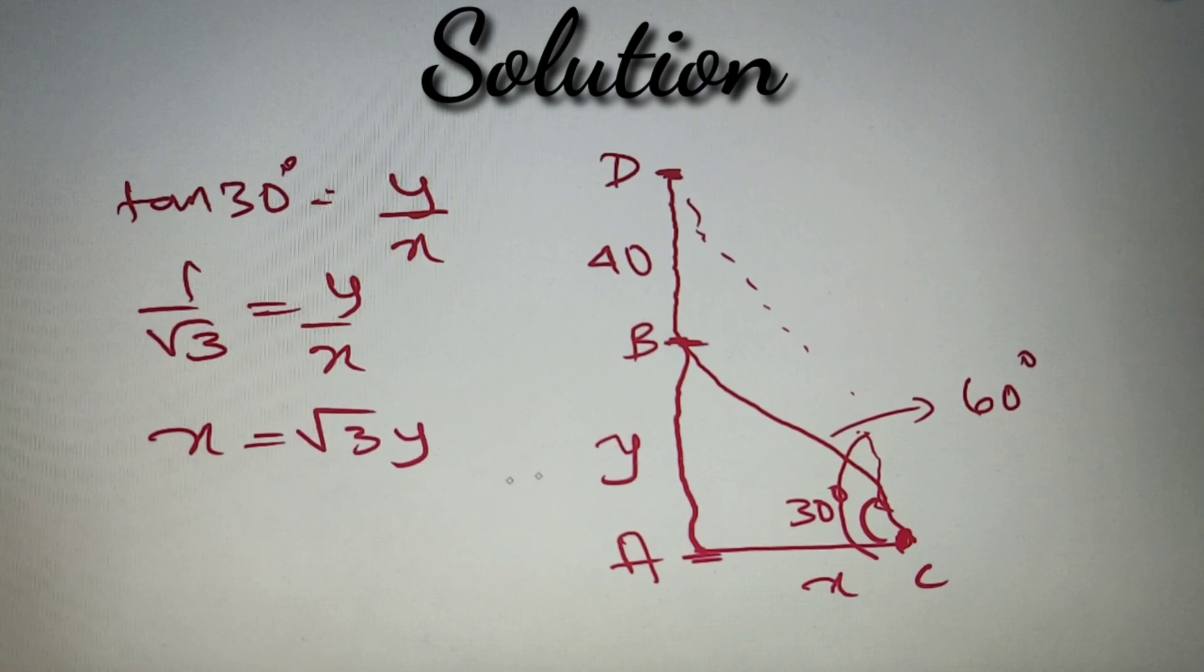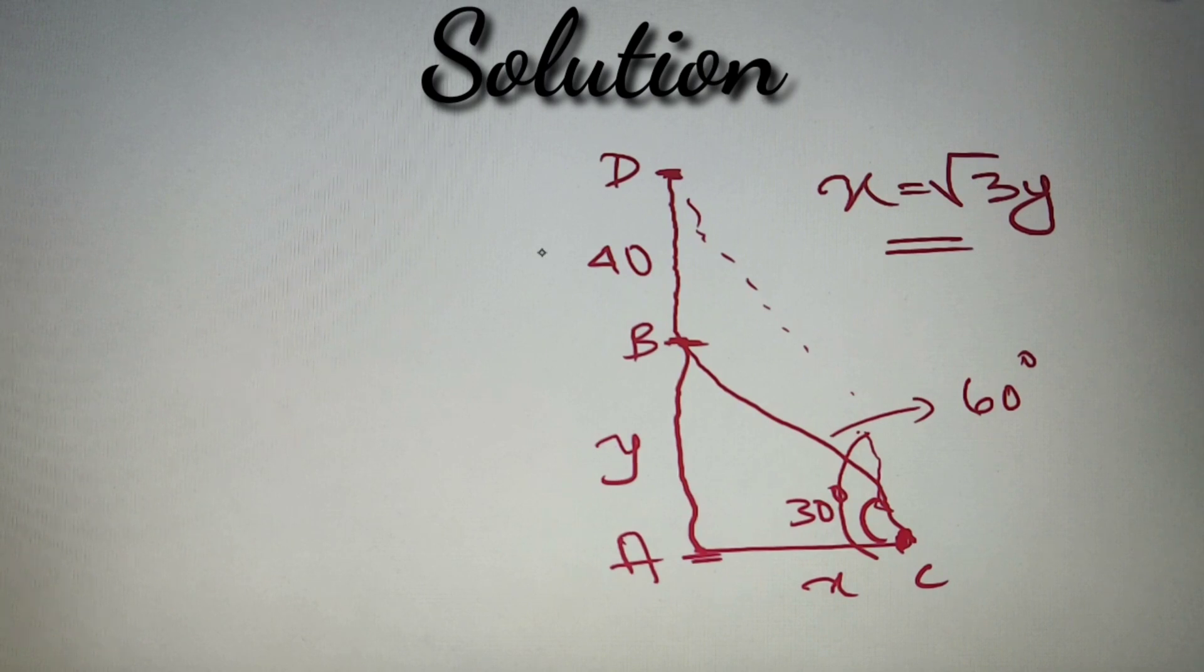So according to our first triangle ABC, we have got that x is equal to root 3y. And now let's move on to the other triangle ADC. So we have got x is equal to root 3y. And in triangle ADC,